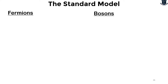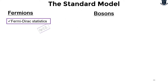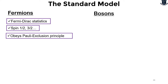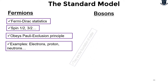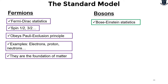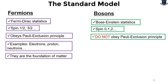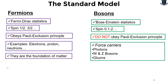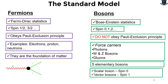Bosons are named after Bose-Einstein statistics. They have integer spin: 0, 1, 2 and so on — full integers — and do not obey the Pauli exclusion principle. These are force carriers like photons, W and Z bosons. There are 5 elementary bosons. Scalar bosons have spin 0 and vector bosons have spin 1. Scalar bosons carry mass — called the Higgs boson. Vector bosons are called force carriers.